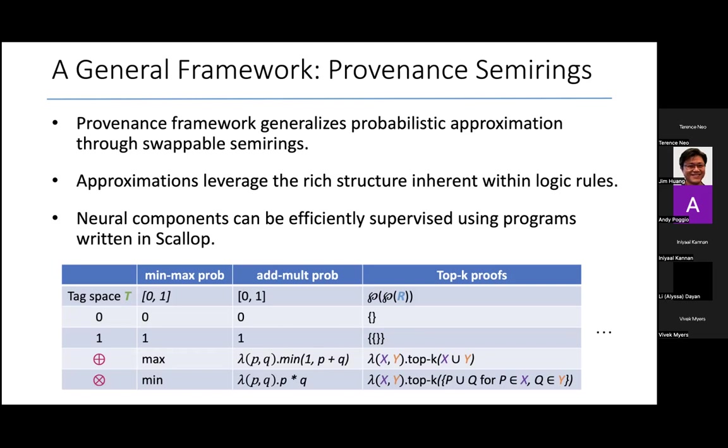And then there was a landmark paper around, I believe, in the late 2000s, around 2005, which showed that all of these applications of tagging relational tuples could be viewed as instances of an algebraic structure called a semiring.